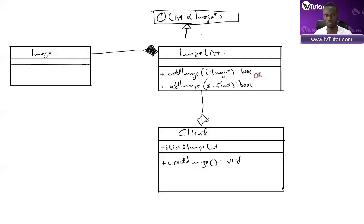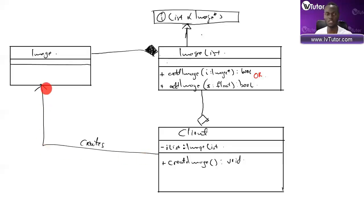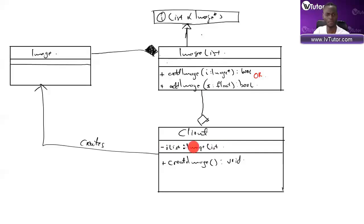The client contains the ImageList under private, but at the same time it uses Image in other ways - it's responsible for creating images. One thing about association relationships is you can give them context describing how it is used. The client is responsible for creating the images. These relationships are just describing what you've done in the class - if I've put an ImageList and it's not a pointer, that's aggregation; if I've got Image pointers, that's composition. And that is how you draw the final diagram of your solution.